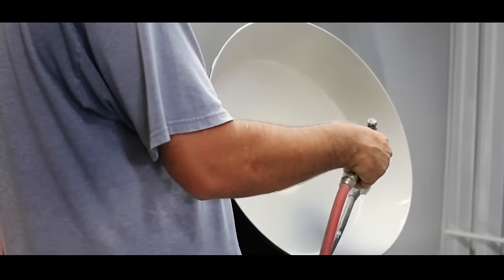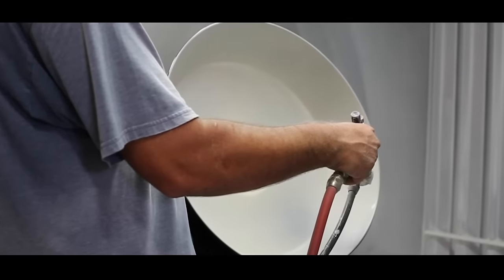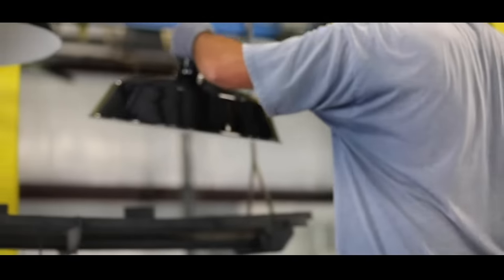White porcelain enamel is sprayed onto the shade's interior for reflectance purposes and it must rotate through the oven a second time.